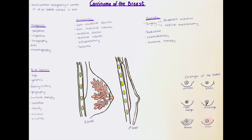After the age of 50, routine mammographies are also recommended for every woman. If a carcinoma of the breast is suspected, the doctor will first do an inspection of the breast to look for any changes. A palpation of the breast as well as the regional lymph nodes is also indicated. Examinations via sonography, MRI, or mammography are the next steps in the diagnosis.